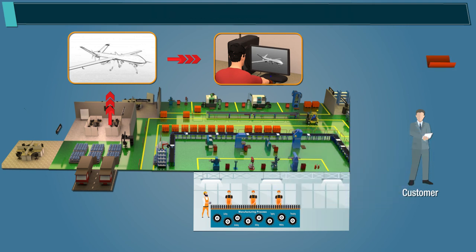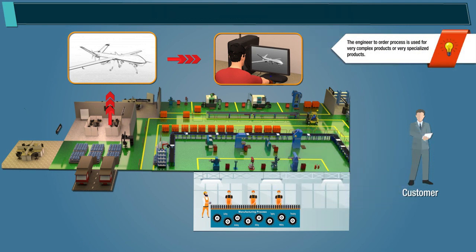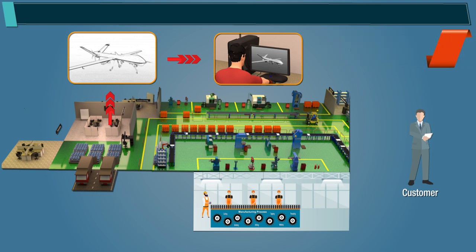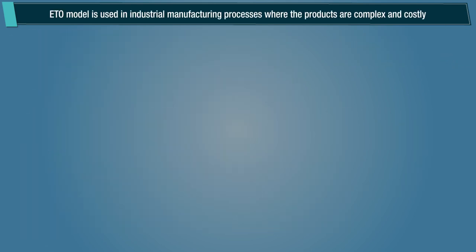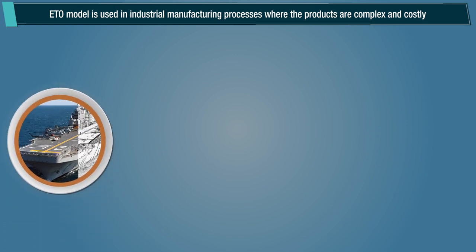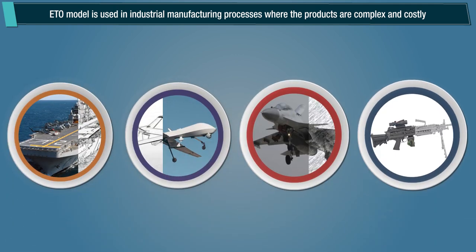Note: The engineer-to-order process is used for very complex or very specialized products. The ETO model is used in industrial manufacturing processes where the products are complex and costly.